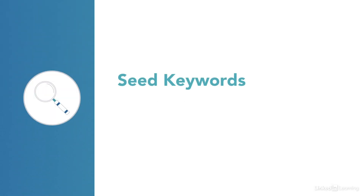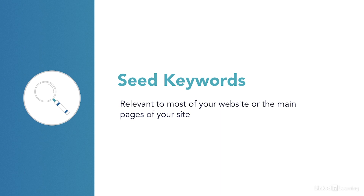There are two main types of keywords people typically type into Google or other search engines. The first is seed keywords. These are words relevant to most of your website or the main pages of your site. If you think of a plant, the seed is the starting point of how the plant grows. Seed keywords are the same type of thing — they're the starting point of most keyword research.